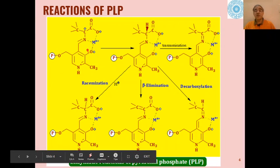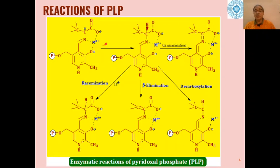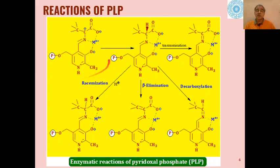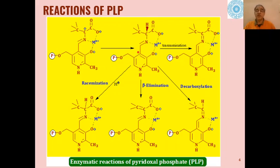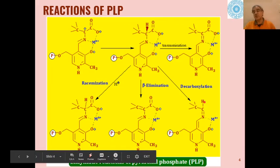Here we can see these examples. This is the structure of PLP with a metal ion acting as cofactor, and it can undergo transformation. First, a carbocation of the alpha-amino acid is formed, then it forms a Schiff base with the co-enzyme. This is the co-enzyme; this is the alpha-amino acid Schiff base. The carbocation then takes up a hydride ion and the transamination reaction takes place. These intermediates can then undergo different types of racemization, beta-elimination, or decarboxylation reactions.